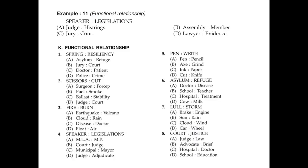A functional relationship means the function of an object, noun, or person. A speaker makes legislations — meaning laws of a country. Looking at the options, judge is a person, but a jury is not a person — it's more of a body of people. Assembly is also not a person. A lawyer is a person, and a judge gives out judgments based on hearings, so this is the right answer.